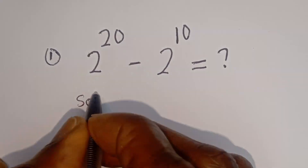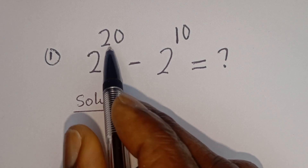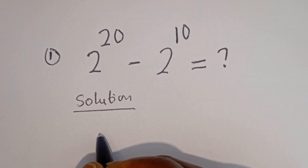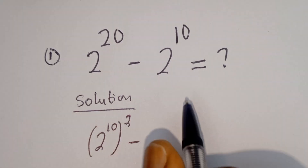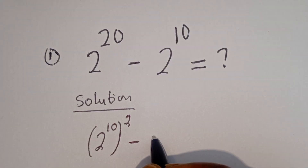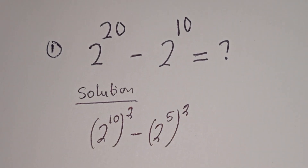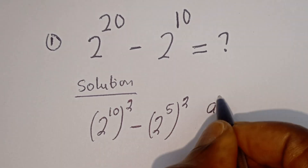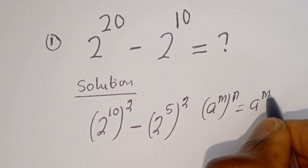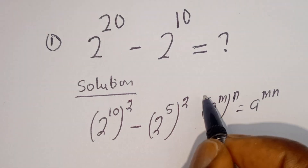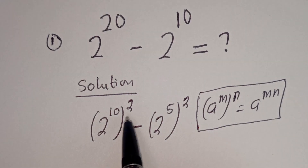Solution. 2 to the power of 20 can be written as 2 to the power of 10, squared. And 2 to the power of 10 can be written as 2 to the power of 5, squared. That is, if you have a to the power of m to the power of n, it is equal to a to the power of m times n. Then this is in the form of a perfect square.